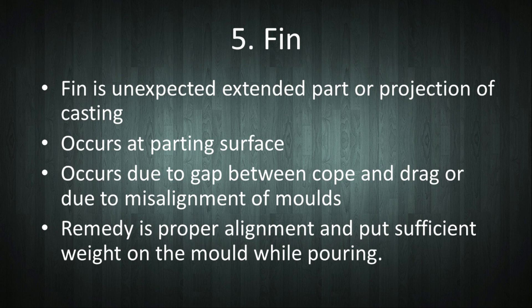The next defect is fin. Fin means extended surface. Here fin is unexpected and hence it is a defect. It occurs usually at the parting surface. The molten metal flows in between the gap of cope and drag, forming a thin fin-like extension to the casting which is not required. This fin is machined later. It occurs due to the gap between cope and drag or misalignment of moulds. The remedy is proper assembling of the mould and providing sufficient weight on the mould.